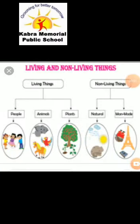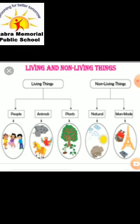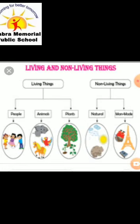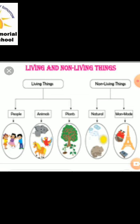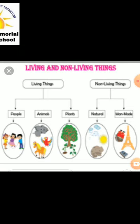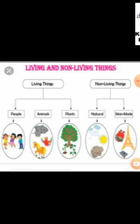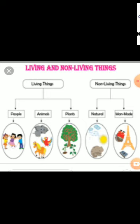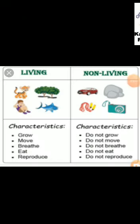You can see the flowchart with both living and non-living things. I have taught you man-made things and natural things. Living things include people, animals, and plants. Non-living things include natural things like the sun, rocks, mountains, and clouds, as well as man-made things like towers, books, notebooks, dolls, and electronic equipment or gadgets.